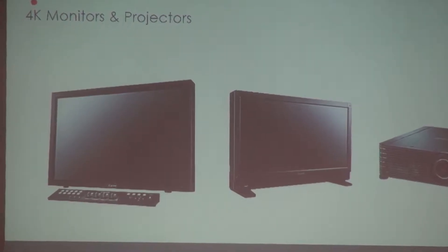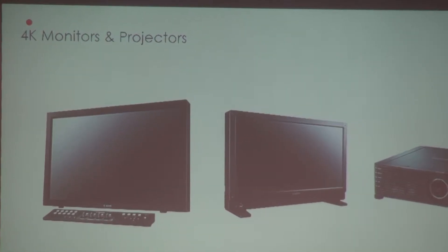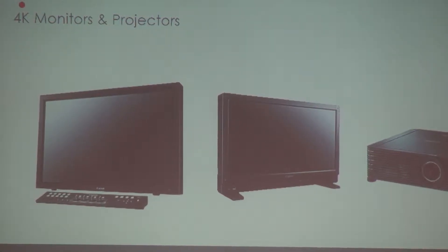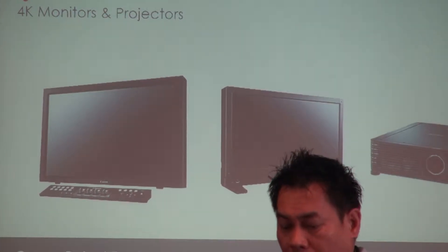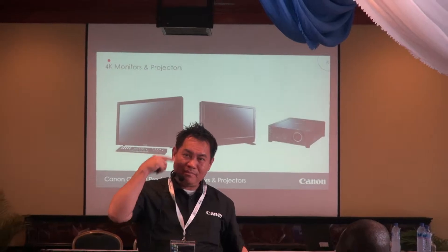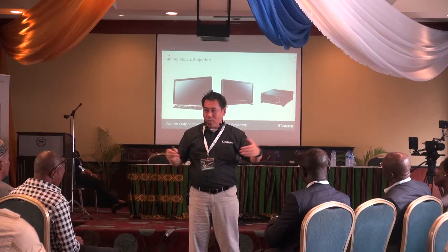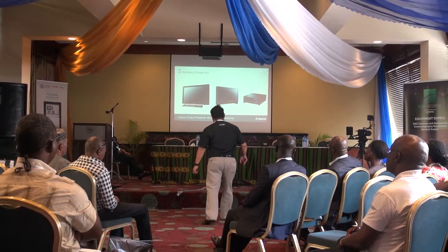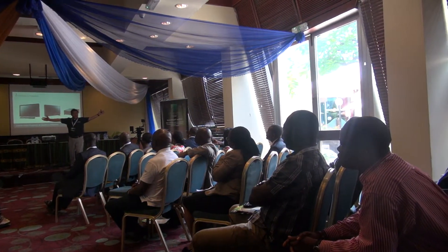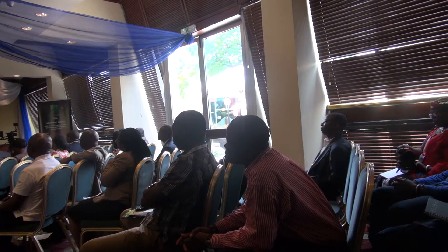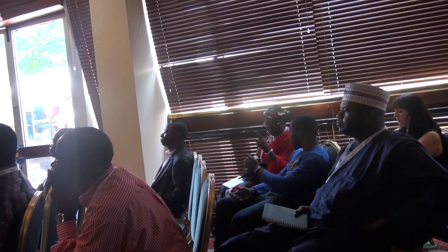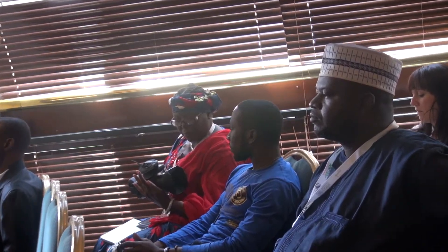In terms of other products, we have two monitors — 30 inch and 24 inch — both 4K, to give you the high dynamic range. We also have a 4K projector. Most projectors you buy commercially can only project a large image if placed at the back of a large room. In Canon, we have what we call short throw — even if the projector is at this close distance, it can still give you that big screen size. You don't need a big auditorium, two times a basketball court, to get that projection size.